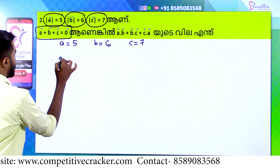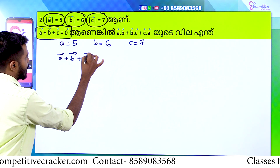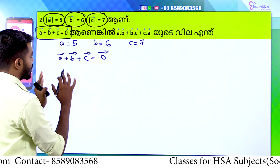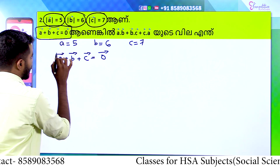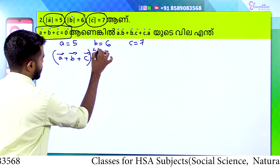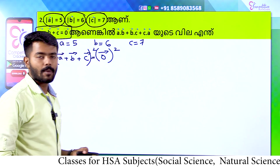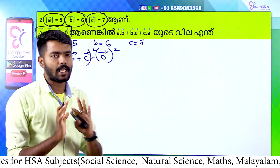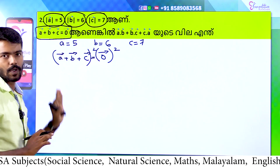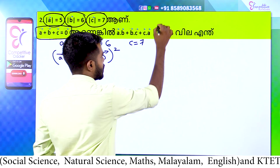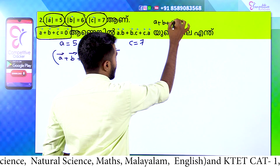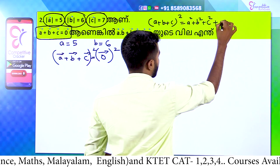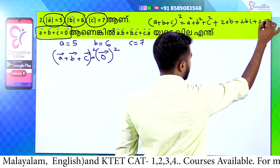We have a condition that vector A plus vector B plus vector C equals zero. We will square both sides. That means we expand A plus B plus C the whole square, which equals A square plus B square plus C square plus 2AB plus 2BC plus 2AC.